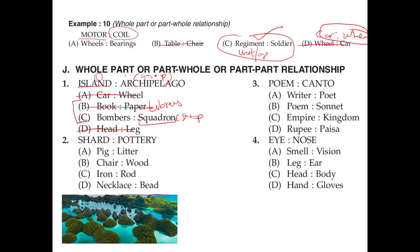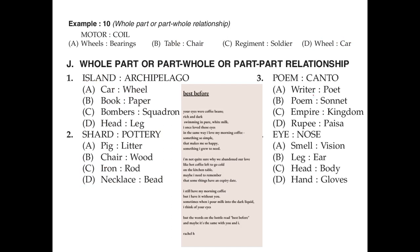So we have option C as our last choice. A poem and canto: cantos are like paragraphs of a poem. For example, one paragraph is one canto and another paragraph is another canto. The breaking of paragraphs in a poem are called cantos. A canto can't exist without a poem, so the poem comes first and the canto becomes a part of it.